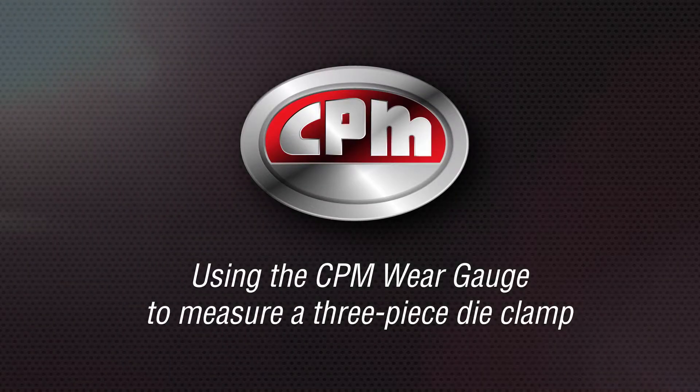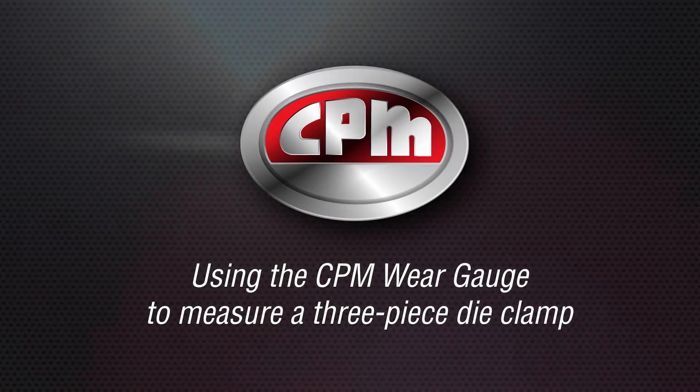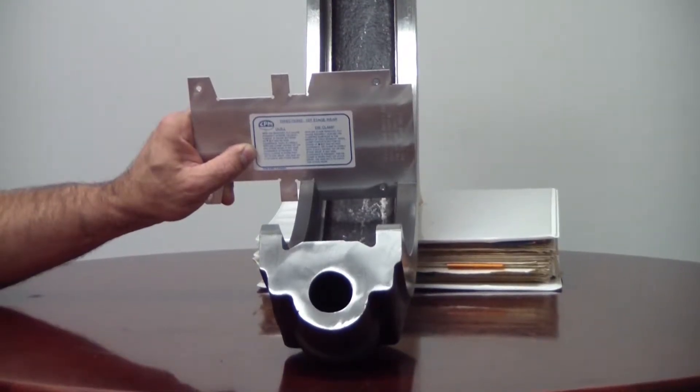This video demonstrates the usage of a die clamp quill flange wear gauge on a three-piece ring clamp. We are looking at the outside flat surfaces on a three-piece ring clamp.